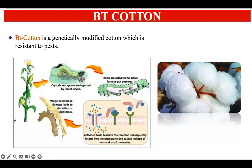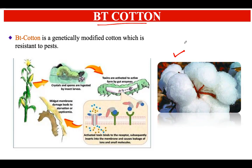Hello everyone. In this lecture we will be talking about the mechanism of the formation of Bt cotton. Bt cotton is a genetically modified cotton crop which is pest resistant, and this variety of cotton produces an insecticide that is able to combat a particular insect called the bollworm.